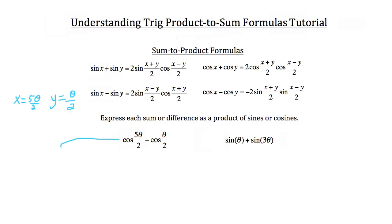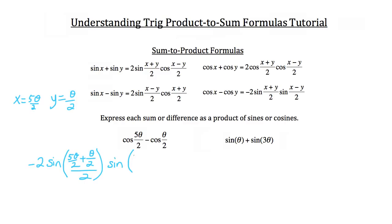Plugging into the formula, this becomes negative two times the sine of x plus y — so five theta over two plus theta over two, all over two — times the sine of x minus y — so five theta over two minus theta over two, all over two. We've now expressed this difference as a product of sines.